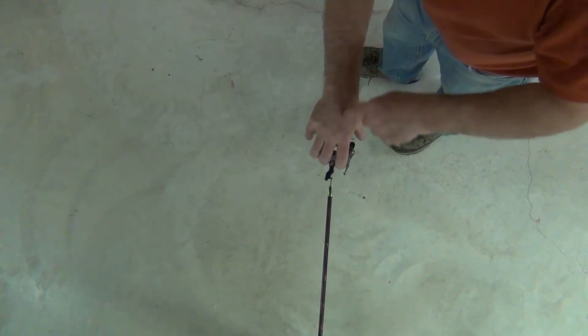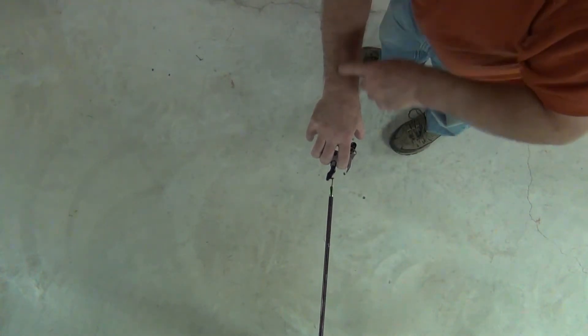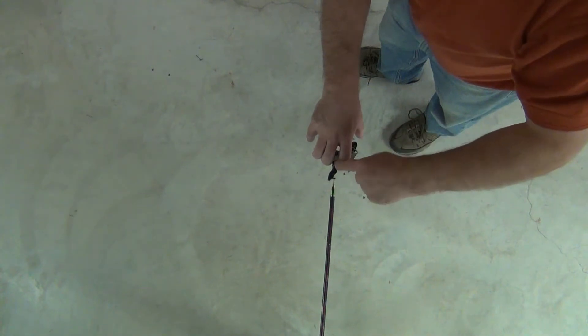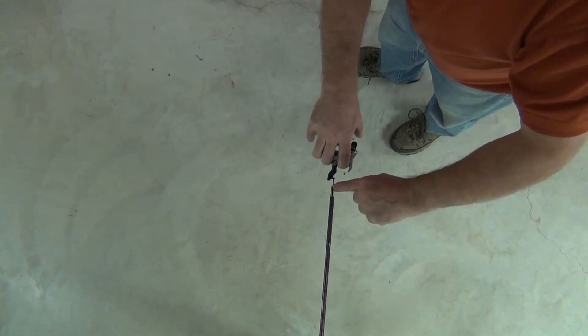Currently my forearm is in line with the bowstring. We're straight through here, through the release, through the hook, through the D-loop, to the string, up to the cams.